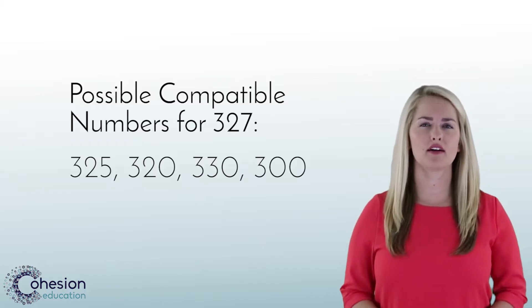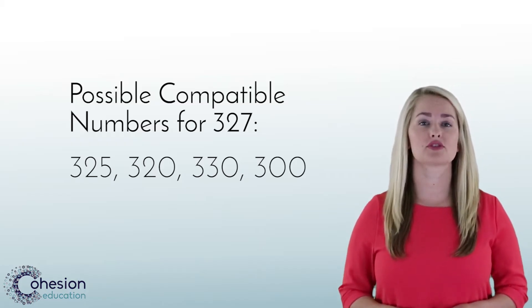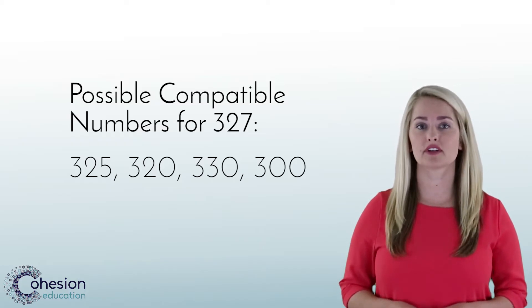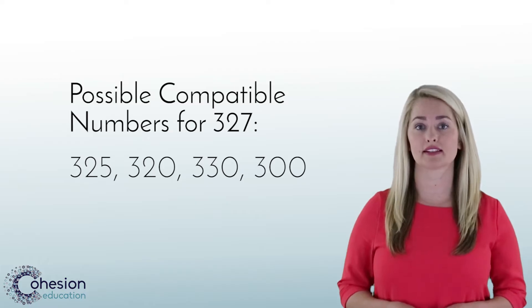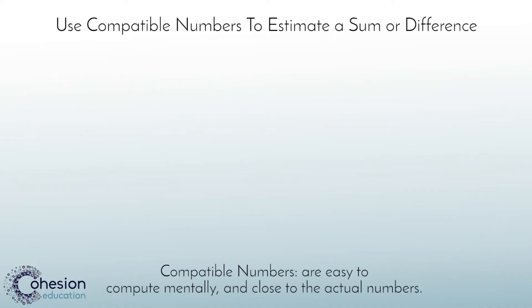Students should have a strong understanding of place value in order to use the strategy of rounding when estimating addition and subtraction. Students may use two options when estimating to find a sum or difference. The first is identifying compatible numbers — numbers that are easy to compute mentally and are close to the real numbers.